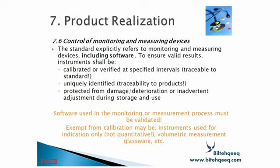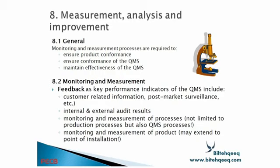Control of monitoring and measuring devices is the same as in ISO 9000. The standard explicitly refers to monitoring and measuring devices including software to ensure valid results. Instruments shall be calibrated or verified at specified intervals based on standards, uniquely identified with traceability, protected from damage, filtration or inadvertent adjustment during storage and use. Software used in monitoring or measurement processes must be validated. Every instrument used for measurement must be calibrated. Monitoring and measurement processes are required to ensure product conformance and conformance of the quality management system.